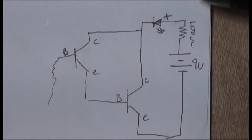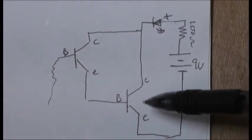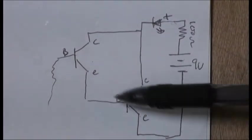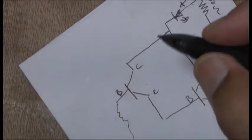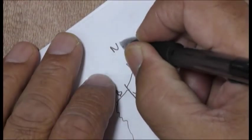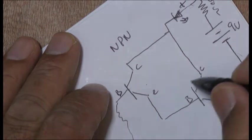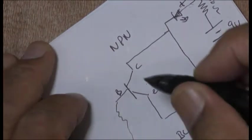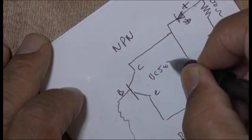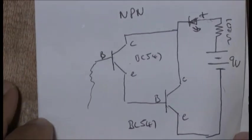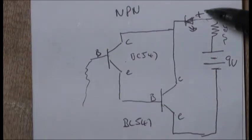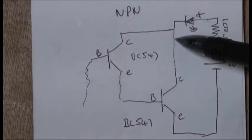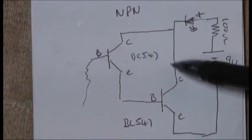So guys, I'm using a Darlington pair here, and we're using the same transistors, which is NPN BC 547 transistors. This is BC 547, this is BC 547. Okay, so that's what we're using. We're connecting this LED here through a 100 ohm resistor to the positive, which is then going to the collector. Both ends are going to the collector here.